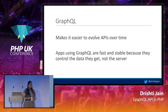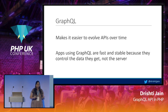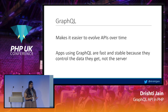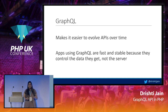GraphQL also makes it easier to evolve APIs over time. Business requirements of your application might change, but you would have to support both the existing structure and the new one. GraphQL provides a great way of handling deprecated fields, which makes it very easy to maintain your application over time even if there are a ton of changes due to business requirements. Apps built using GraphQL are fast and stable because they control the data they get, not the servers.